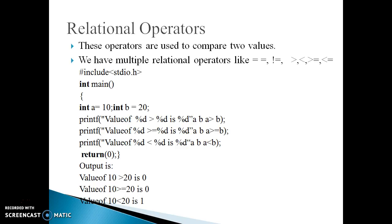The next operator is the relational operator. The relational operator checks the relationship between two operands. If the relation is true, it returns 1; if the relation is false, it returns 0. The relational operators are: equal to equal to, greater than, less than, not equal to, greater than or equal to, and less than or equal to. Here is a simple example of a relational operator.